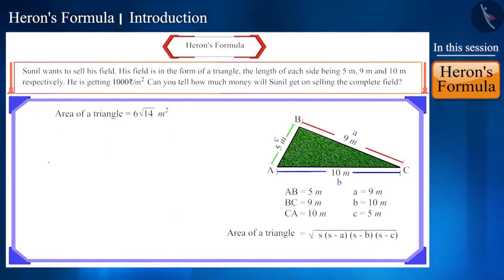The value of root 14 is approximately 3.74165 and in this way the total area of the field will be 22.449 or 22.45 square meter.